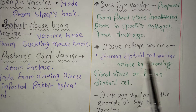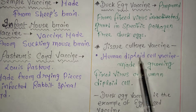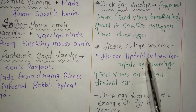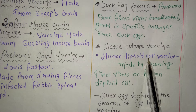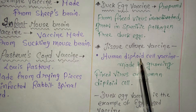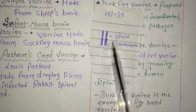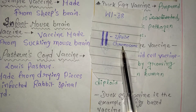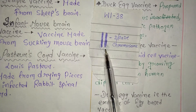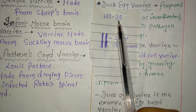Let's understand this term: 'diploid' means two. Human diploid cells means a cell which has two pairs of chromosomes — one pair of chromosomes means two chromosomes. So this is called diploid. An example of a human diploid cell line is WI-38.